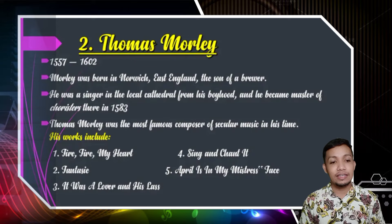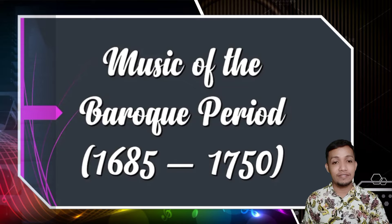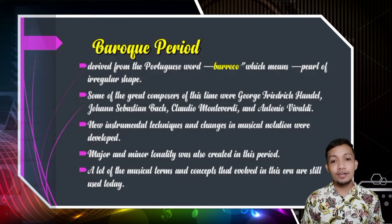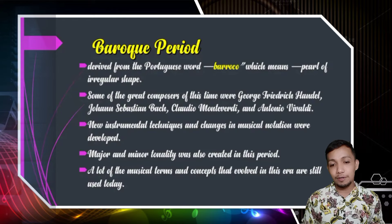Last to discuss is the music of the Baroque period, and it existed from the year 1685 and ended in the year 1750. Baroque is derived from the Portuguese word Barroco, which means pearl of irregular shape. Some of the great composers of this time were George Friedrich Handel, Johann Sebastian Bach, Claudio Monteverdi, and Antonio Vivaldi. New instrumental techniques and changes in musical notation were developed during this period. Major and minor tonality was also created in this period, and many musical terms and concepts that evolved in this era are still used until today.